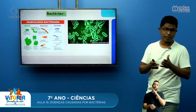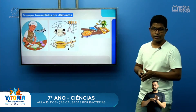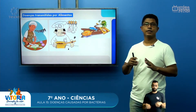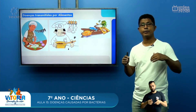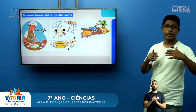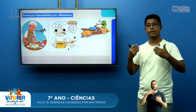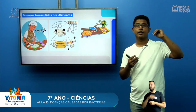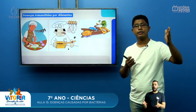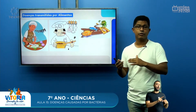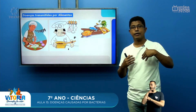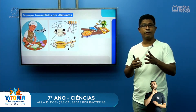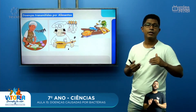Sobre as bactérias que transmitem doenças pelos alimentos: uma bactéria precisa de ambientes específicos para se reproduzir cada vez mais. A temperatura ambiente é ideal para as bactérias — aquela temperatura boa para você é ainda melhor para elas. Quanto mais a temperatura sobe, mais rapidamente elas se reproduzem. Por isso o frio conserva nossos alimentos, porque reduz a velocidade de reprodução das bactérias.